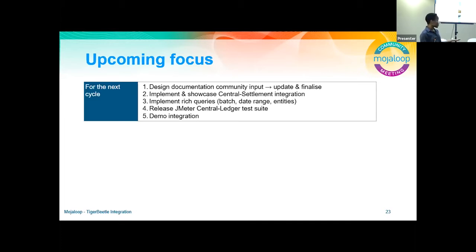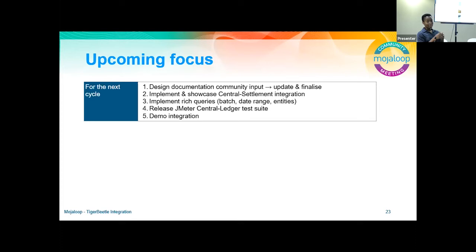Where do we go from here? We want to ask for reviews and input on the chart of accounts and design docs. We look forward to integrating Tiger Beetle into Central Settlement, implementing rich queries, and showcasing those in June/July. We'll also be submitting the JVita performance test suite into the repo as reusable tooling for all testing, and showcasing this work at our next convening.